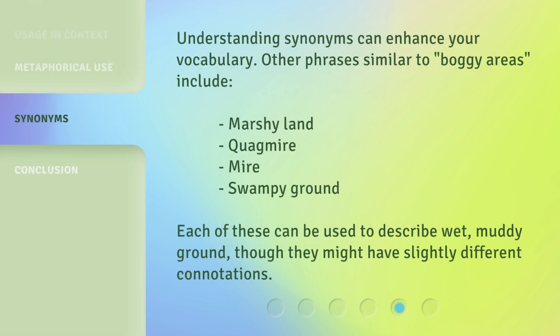Understanding synonyms can enhance your vocabulary. Other phrases similar to 'boggy areas' include 'marshy land,' 'quagmire,' 'mire,' and 'swampy ground.' Each of these can be used to describe wet, muddy ground, though they might have slightly different connotations.